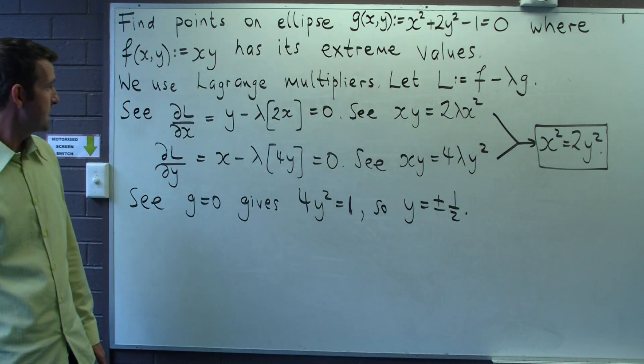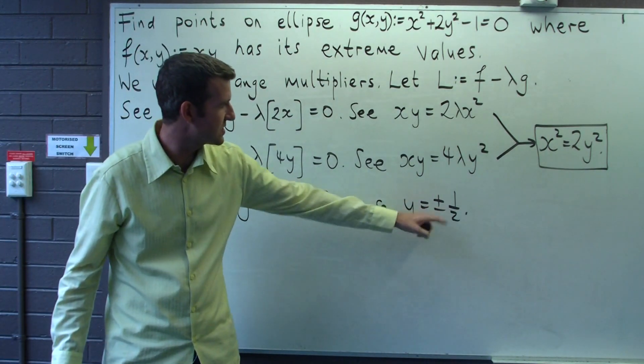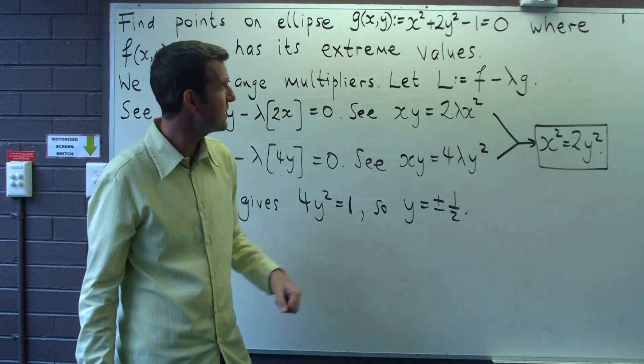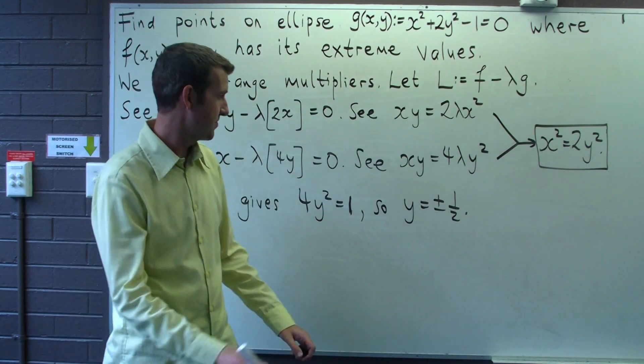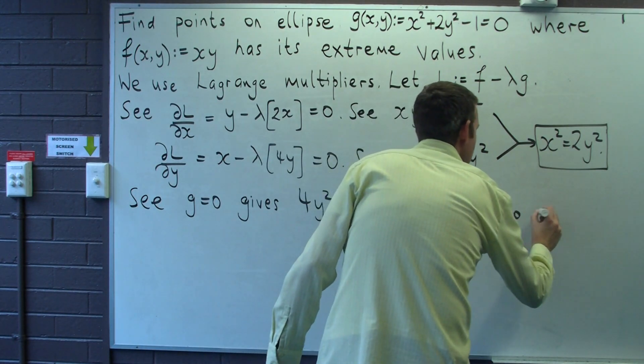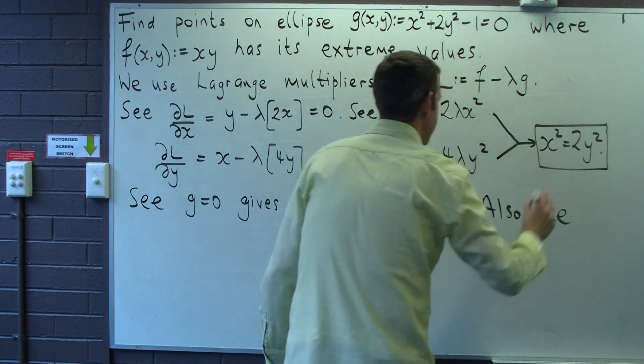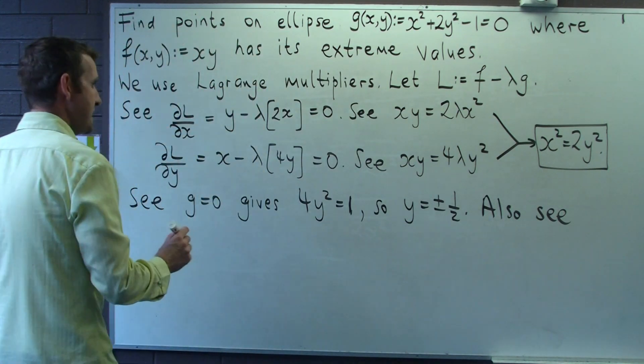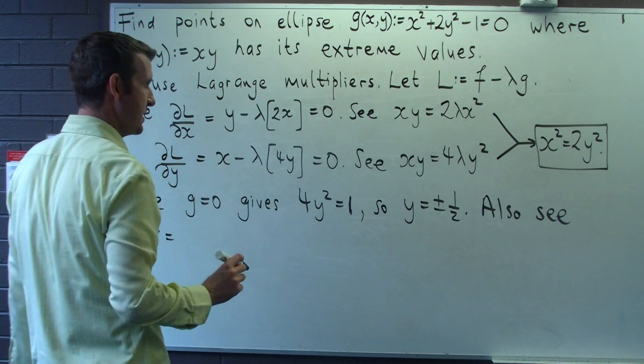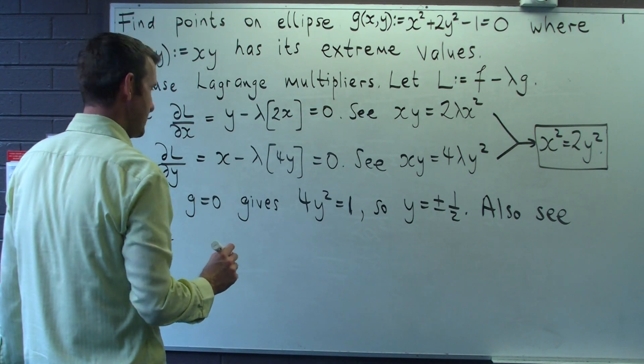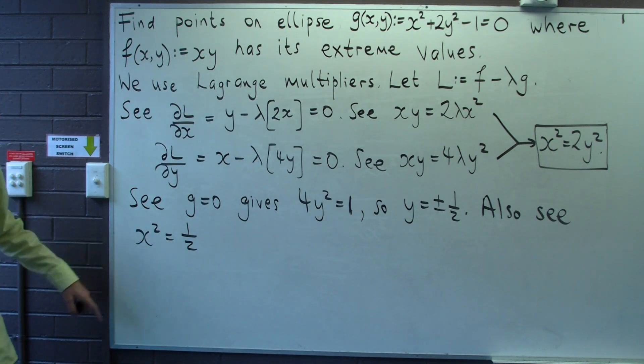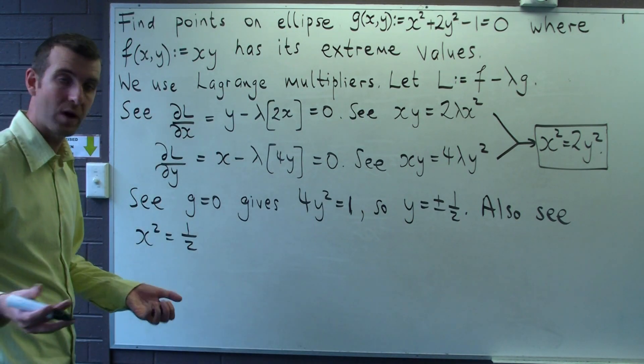All right. Well, if y equals plus or minus one half, I can go back to here and work out what x is. Okay, x squared is going to be one half also, so taking square roots, x is going to be plus or minus one on root two.